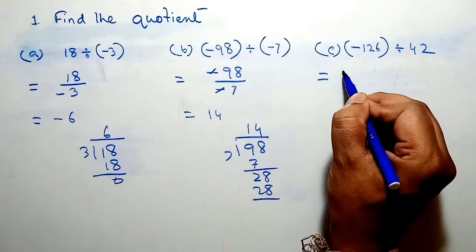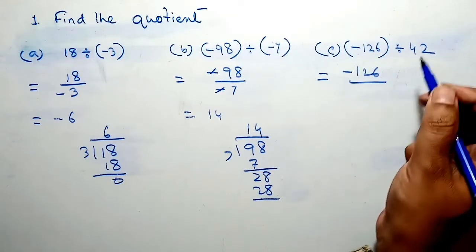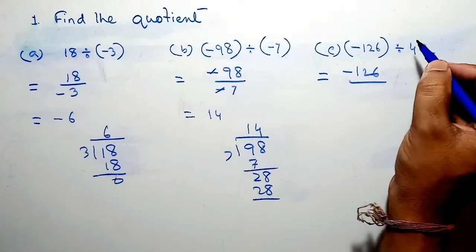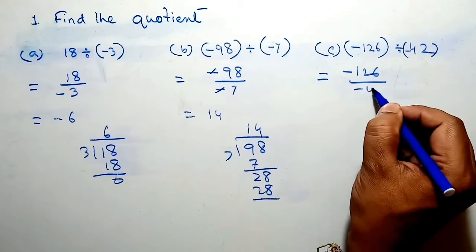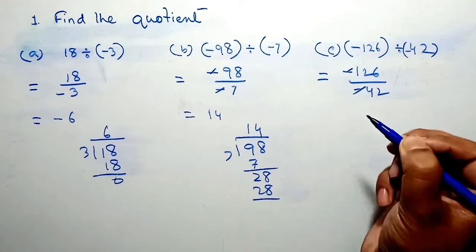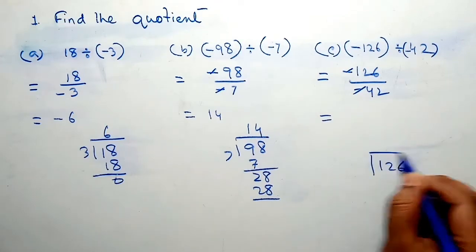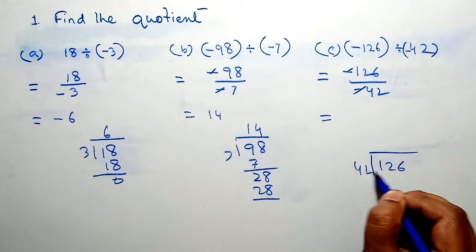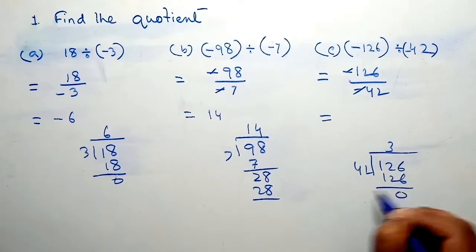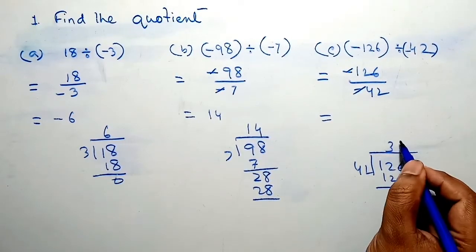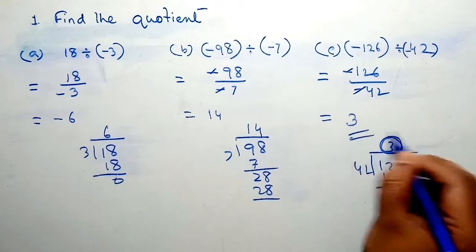Again, question C: minus 126 divided by minus 42. This minus and this minus cancel. Finally we divide 126 by 42. 42 into 3 equals 126, therefore the remainder is 0. So the quotient is 3. Here we write 3 — 3 is our answer.